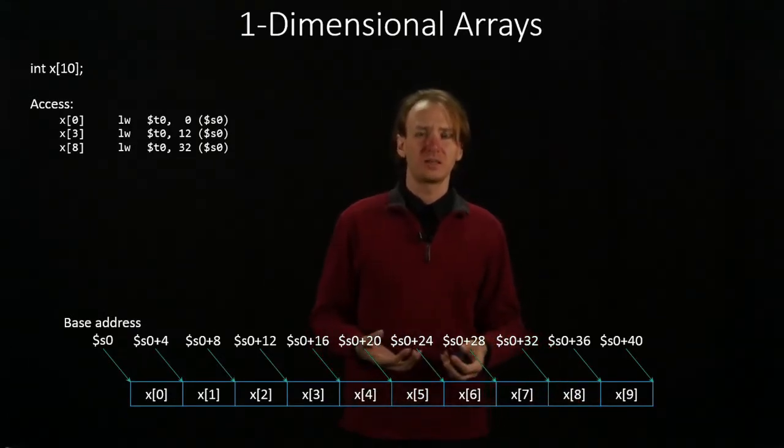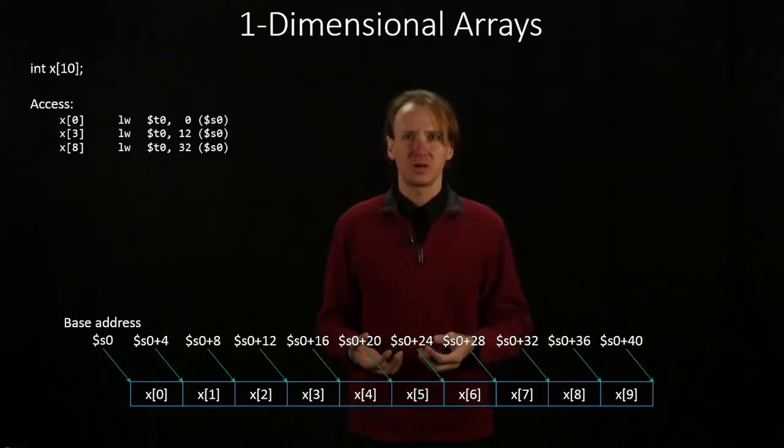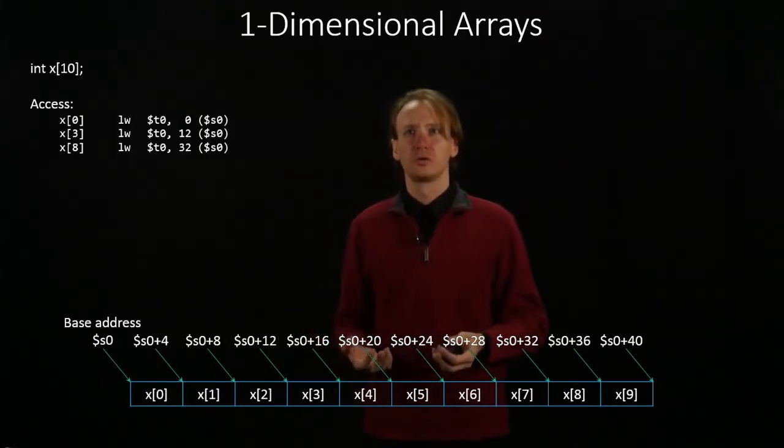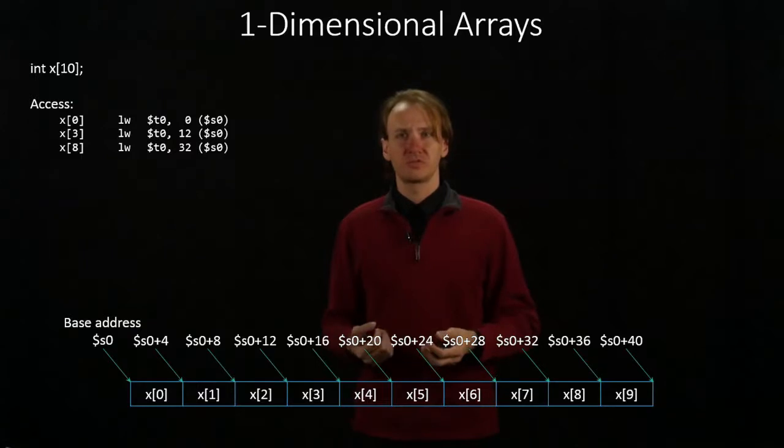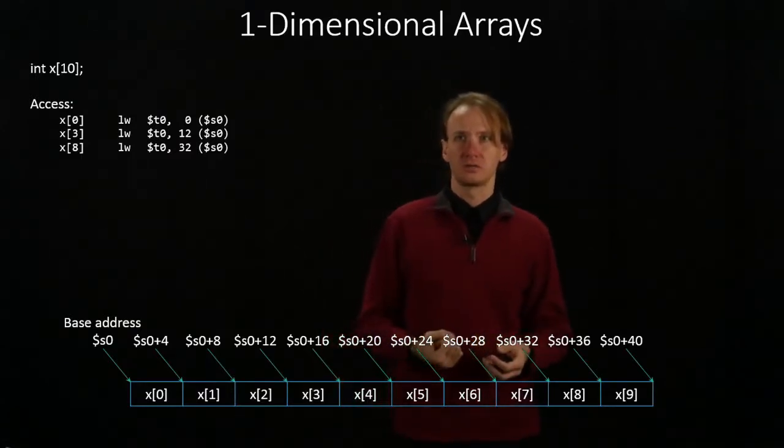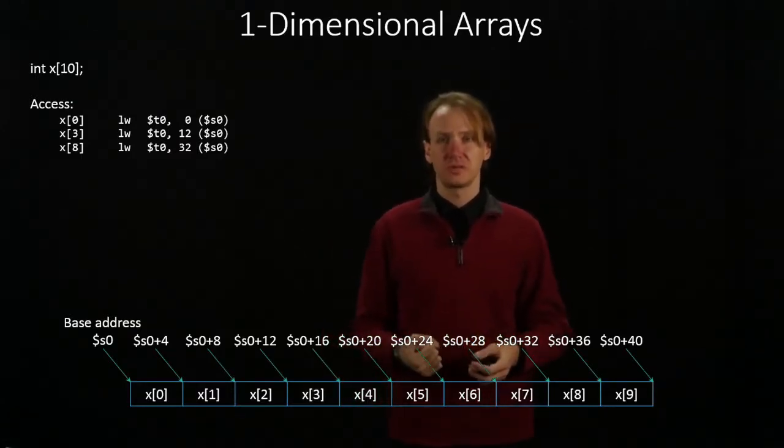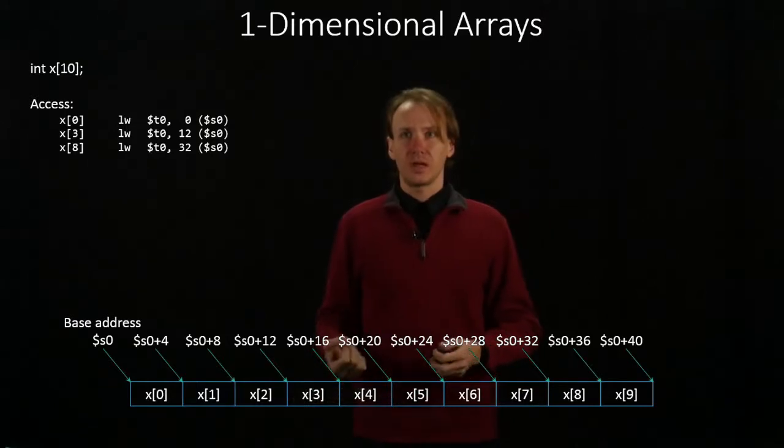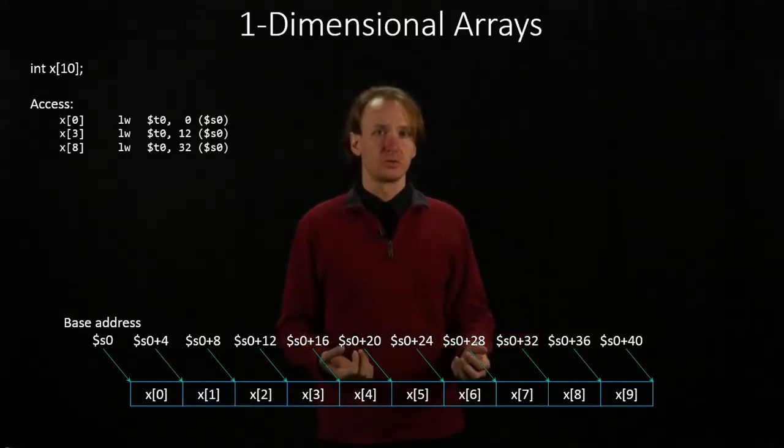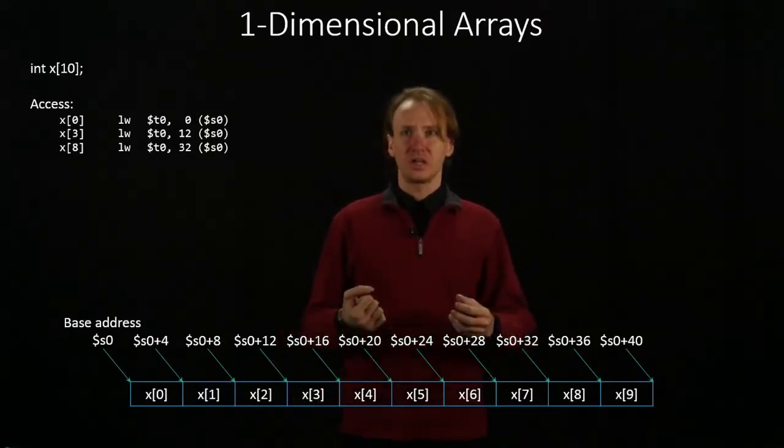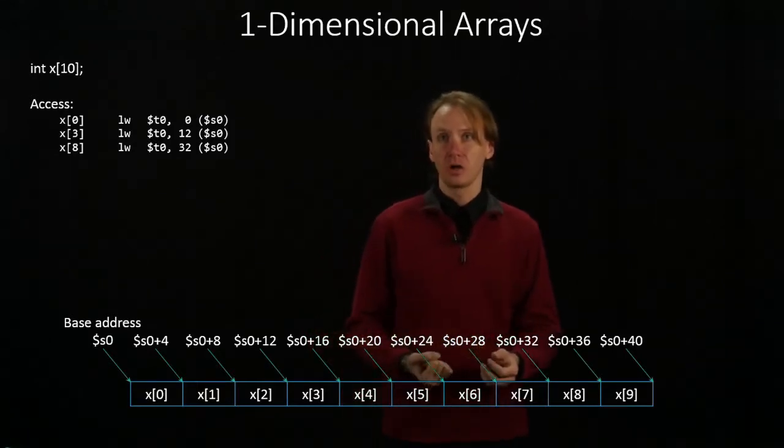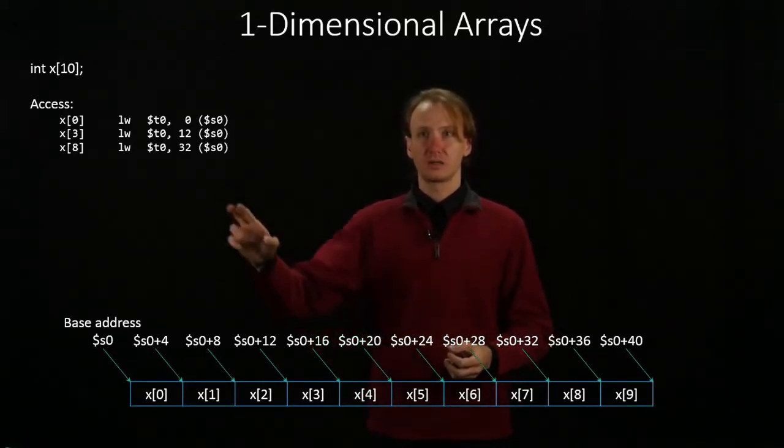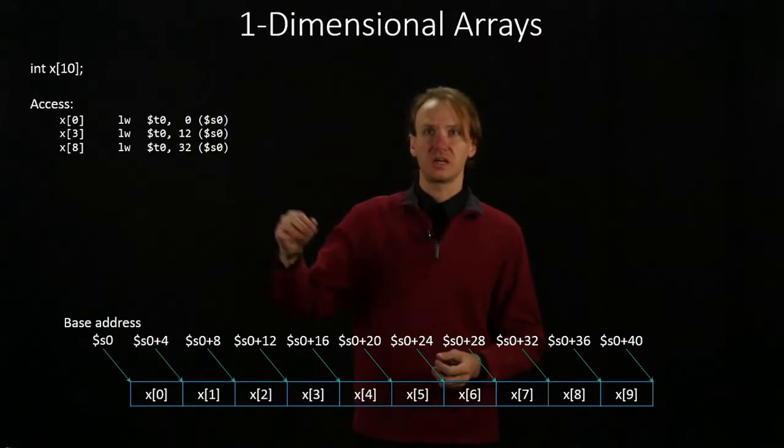But I can also realize that I'm getting numbers that are in multiples of 4. So 0 times 4 gives me 0, and 4 times 3 gives me 12. 8 times 4 is 32. So I could just take my index and multiply it by 4, and that would tell me what that constant offset is.